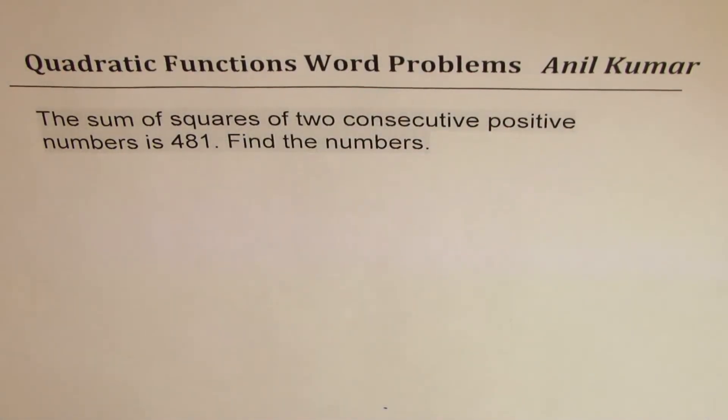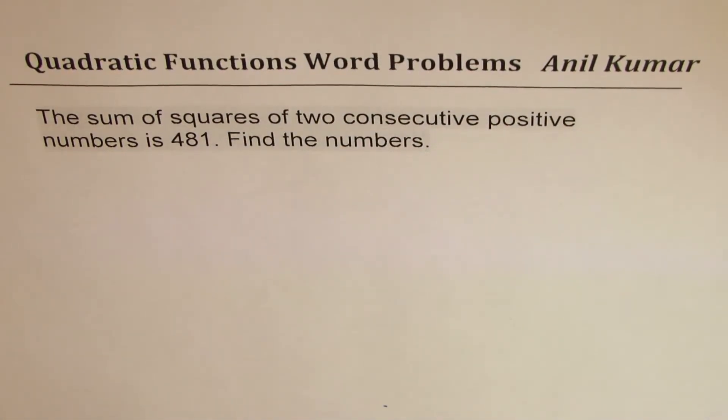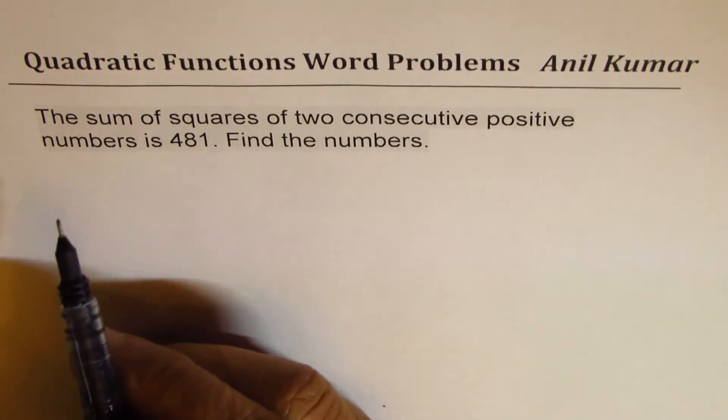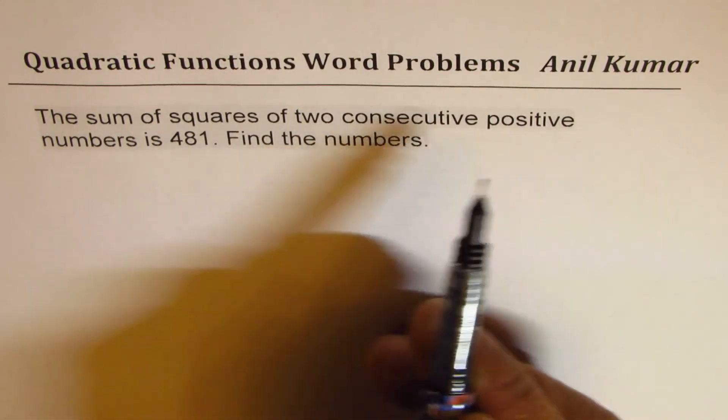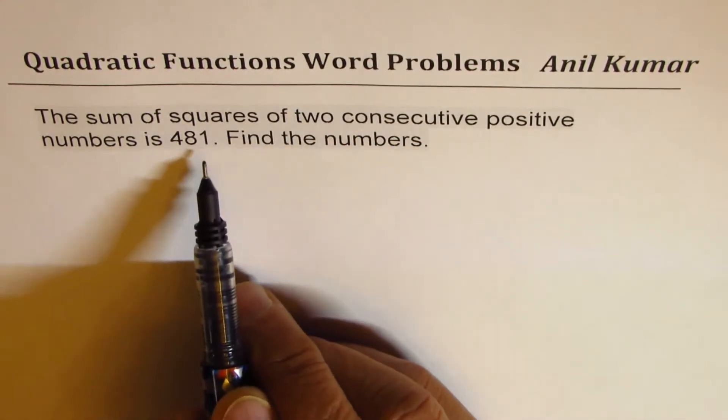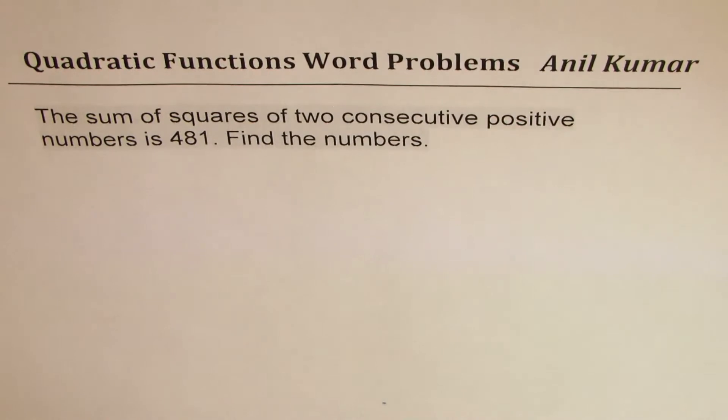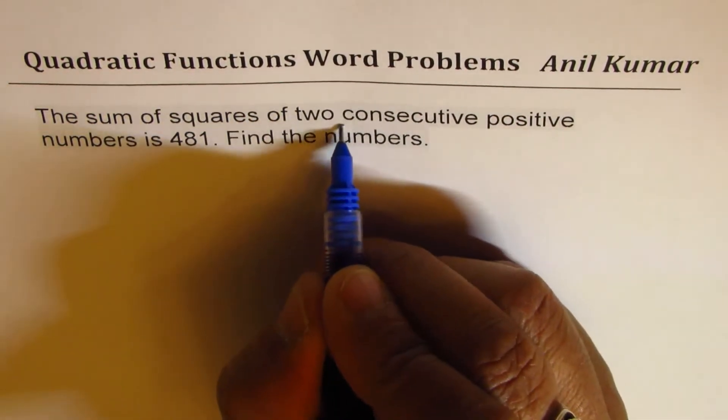I'm Anil Kumar. Here is another question based on quadratic applications. We are talking about numbers. The question here is: the sum of squares of two consecutive positive numbers is 481. Find the numbers.